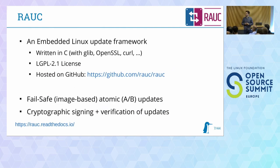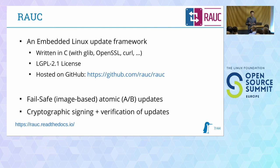A few key facts about RAUC: it's basically an embedded Linux update framework, written in C using GLib as a utility library, OpenSSL for everything related to crypto, and libcurl for network functionality. It's licensed under LGPL version 2.1, hosted on GitHub where community interaction also happens. It provides fail-safe, image-based atomic updating of A/B systems — redundancy boot interacting with the bootloader — and handles cryptographic signing on the server side and cryptographic verification on the target side.